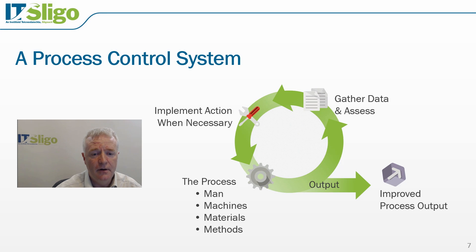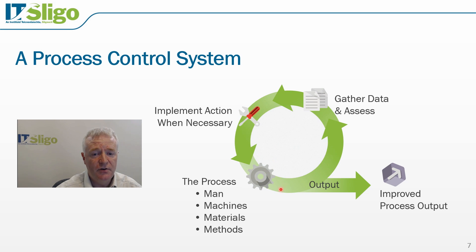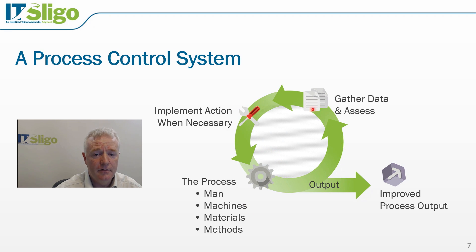A control system is really a feedback loop. Here we see a process control system. We have a process consisting of the man, the machine, the materials, and the methods. This process produces output. At regular intervals we will gather data on this process output, assess it, and gather statistics on it to see whether changes are necessary to the actual process. By doing this, we create a feedback loop, and the result is to improve the process output.